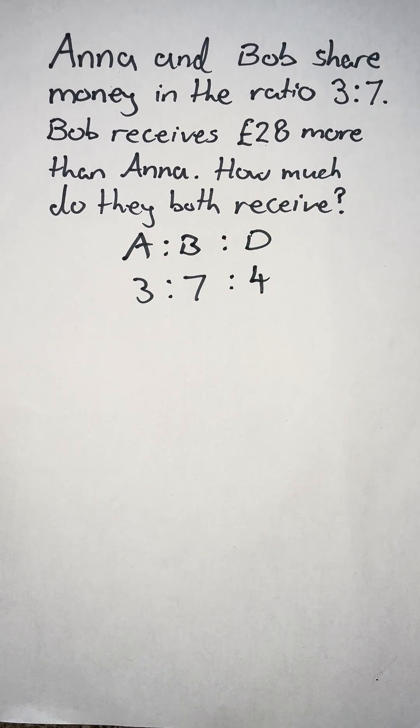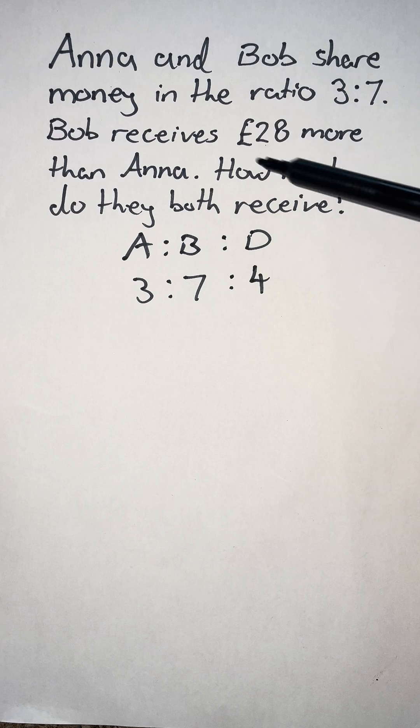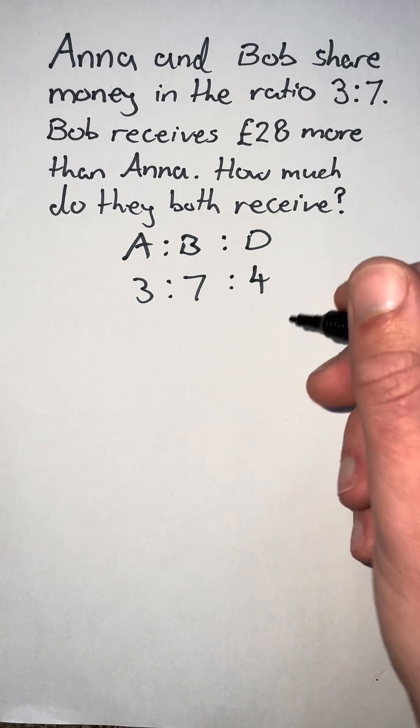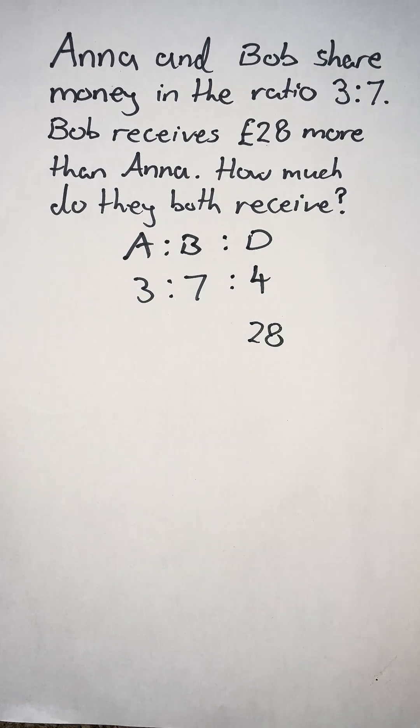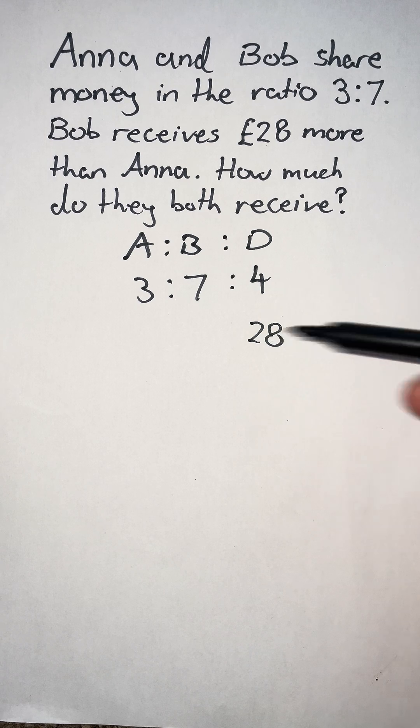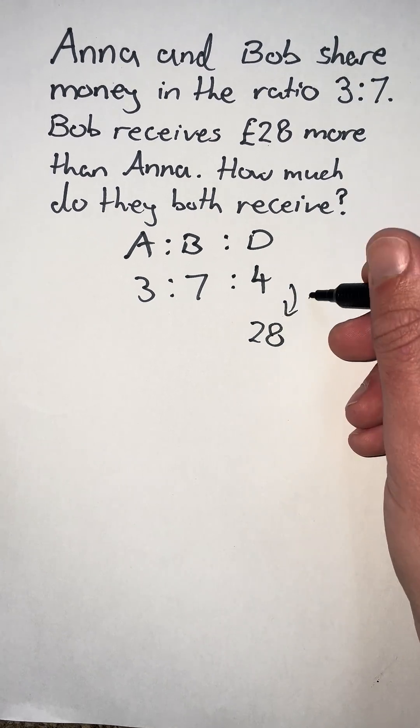Now the real difference between their two shares is £28. So I'm going to write this below. And I now need to think, what do I multiply 4 by to make 28? I multiply by 7.